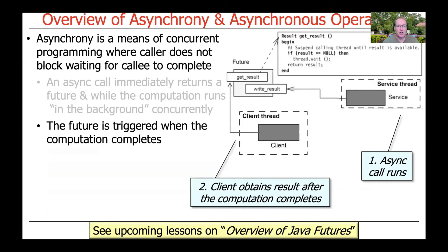When the asynchronous computation completes, the future is so-called triggered. What that means is that the caller — the one trying to get the result — can then go ahead and redeem the future to get the final computation's result. Looking at this from a state diagram, the client starts things off and doesn't have to block, and then at some point when things are done, it goes ahead and obtains the results.